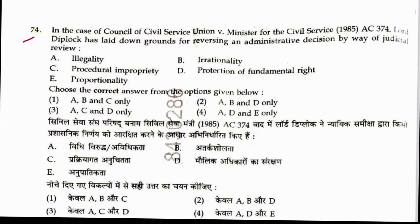Question 74: In the case of Council of Civil Service Unions vs. Minister for the Civil Service (1985), Lord Diplock laid down grounds for reversing an administrative decision by way of judicial review — those are illegality, irrationality, and procedural impropriety. That is the answer.